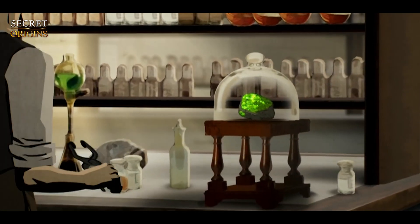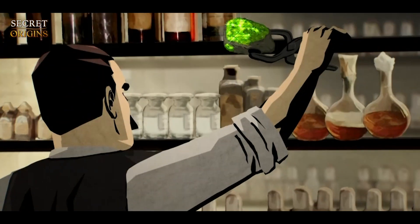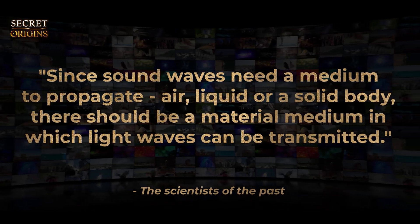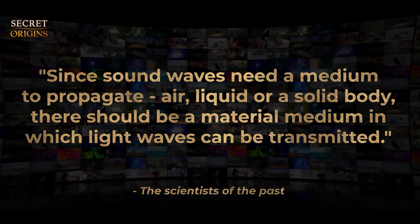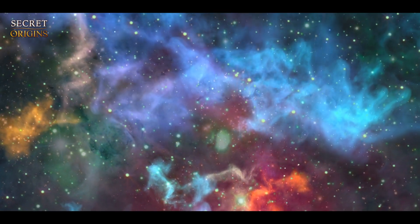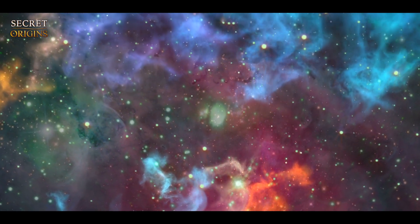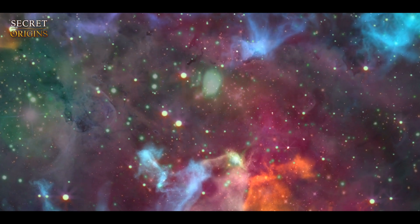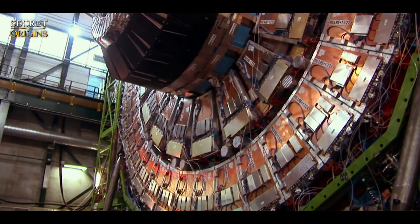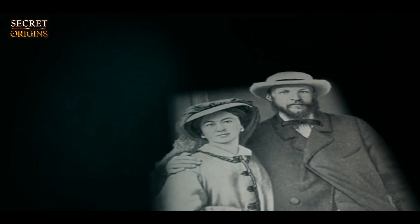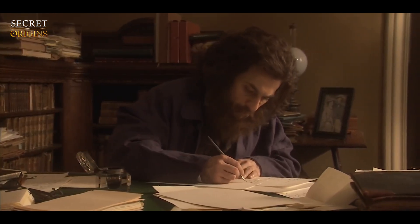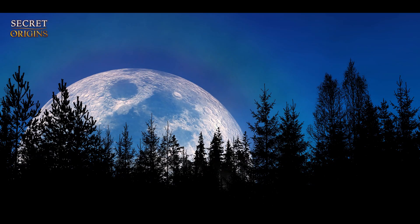In the 19th century, the concept of the world ether had a huge impact. The scientists of that time reasoned like this: since sound waves need a medium to propagate — air, liquid, or a solid body — there should be a material medium in which light waves can be transmitted. For such a medium was chosen the ether, which fills all space and carries light, heat, and gravity. Scientists studied highly rarefied gases to prove the existence of this ghostly substance. Mendeleev also tried by diluting the air to reach some gas with very small weight, so that the properties of ordinary substances would no longer overlap the properties of ether.